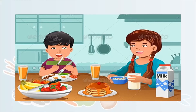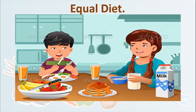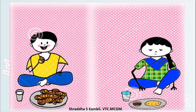There is one more very important thing — they should get equal diet also. In some societies, boys are considered more important than girls, so boys are given good food while girls are not given equal amount or quality of food. This may not happen in educated households, but wherever it does happen, it should not. Boys and girls should get equal diet.